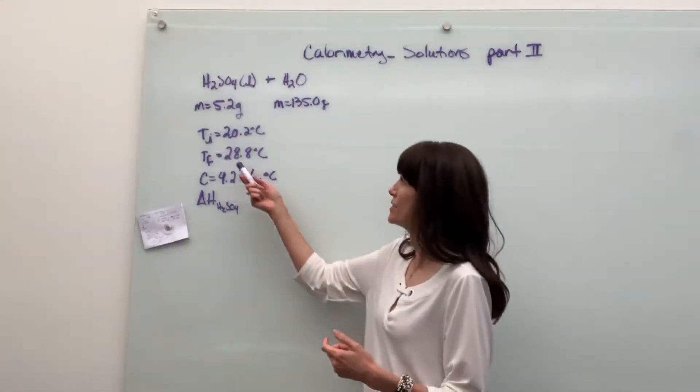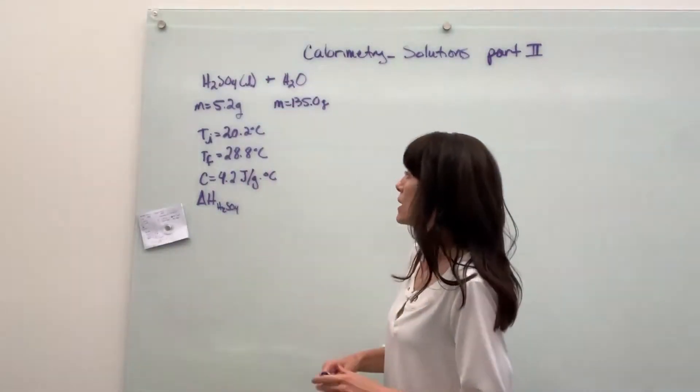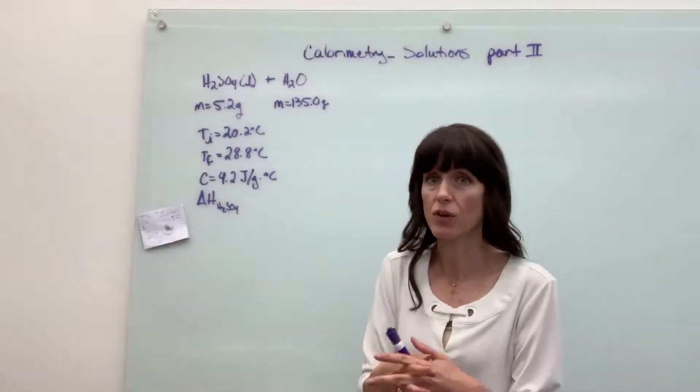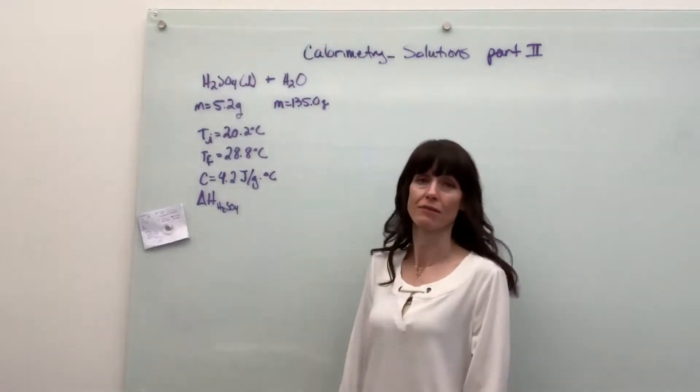And once we mix it, check that out. By only mixing five grams of the acid, it went up eight degrees, 28.8 degrees. Tells us to assume that the specific heat of the overall solution is very similar to water, 4.2 joules divided by gram times degree C.